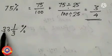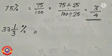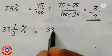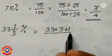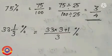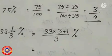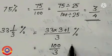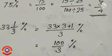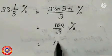Next question: we have to find out the fractional form of 33 and 1 by 3 percentage. First we have to write the improper fraction of 33 and 1 by 3 percent, that is equal to 33 into 3 plus 1 by 3 percentage. 33 into 3 is equal to 99, and 99 plus 1 is equal to 100. That is equal to 100 by 3 percentage. Now we have to find out the fractional form of 100 by 3 percentage, that is equal to 100 by 3 into 1 by 100.